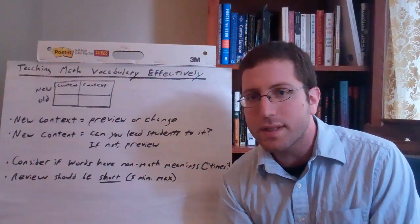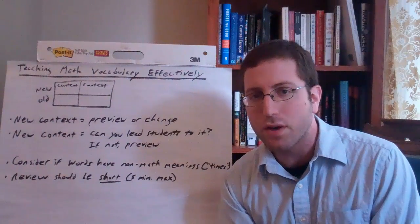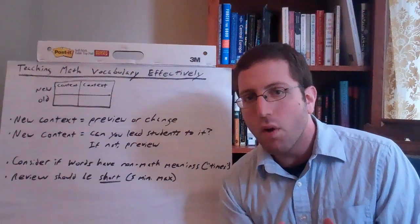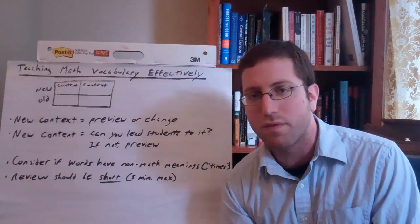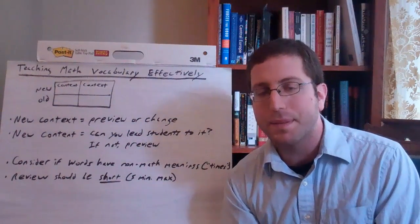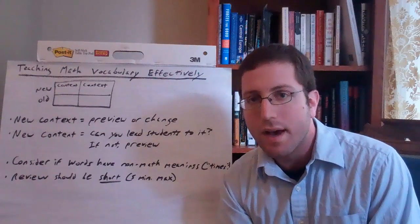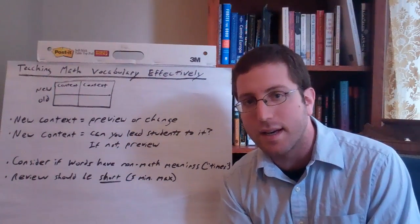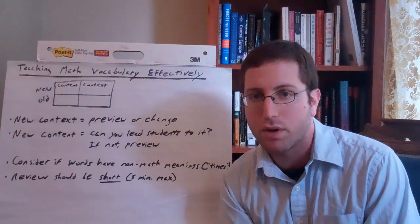And so the authors say if you do have an unfamiliar context, think about either previewing the words ahead of time or if it's not worth it to you, just change that context to something that's more familiar with them. Perhaps consider using something you're doing in another subject. So if you're studying amphibians and lakes in a science class, maybe you actually find the perimeter of the lake instead of finding the perimeter of a farm.